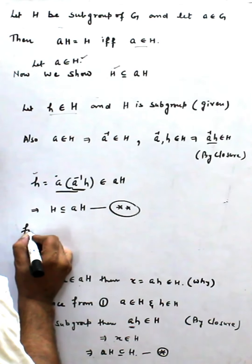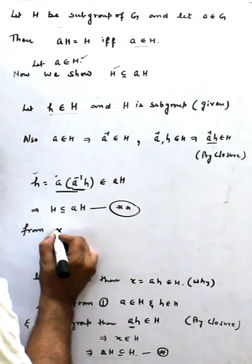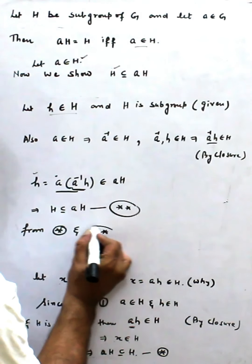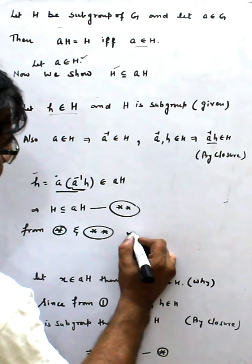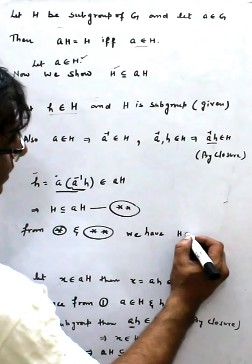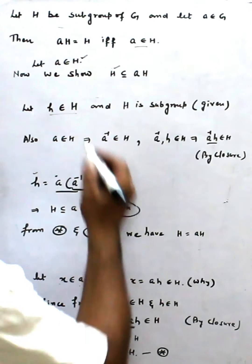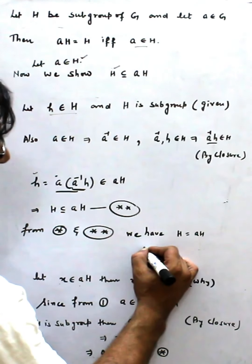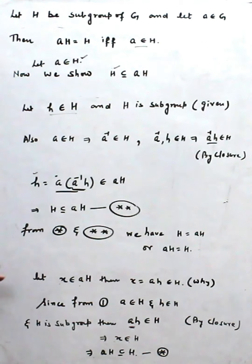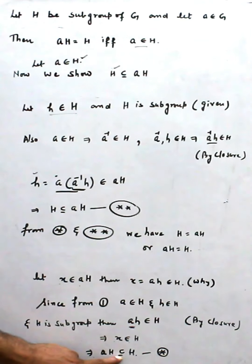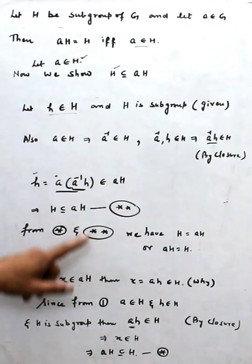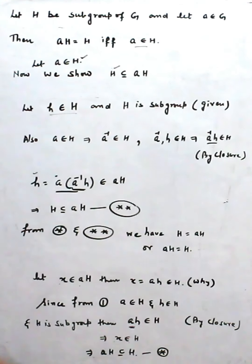So from (*) and (**) we have H equal to AH, or AH is equal to H. Because we have shown AH is contained in H, and H is contained in AH. By this, we have proved the result.